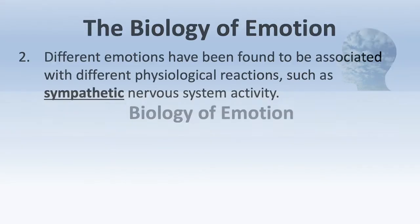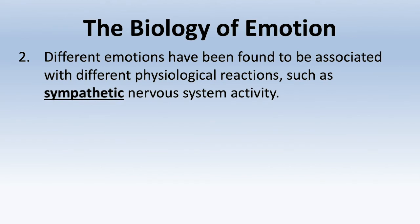Let's talk about the biology of emotion. Different emotions are associated with different physiological reactions, such as sympathetic nervous system activity — the activation of your body, like the fight-or-flight response, when your heart rate increases and your breathing gets faster. Parasympathetic is when your body slows down. The autonomic system is involved with emotions. When you get angry, your heart rate is more likely to increase. If you're afraid, you might breathe faster because it's preparing your body for the fight-or-flight response.